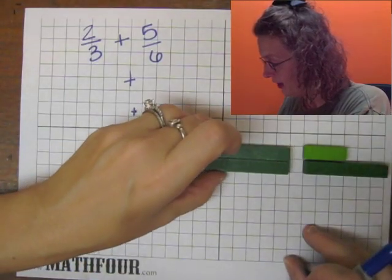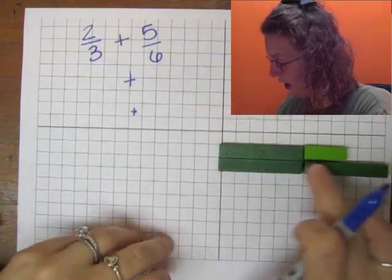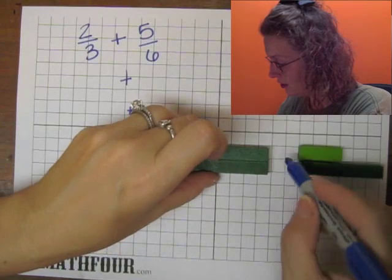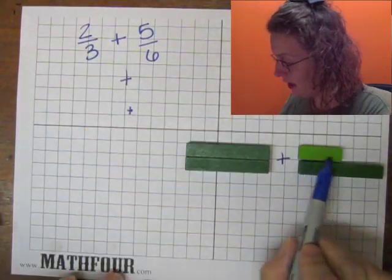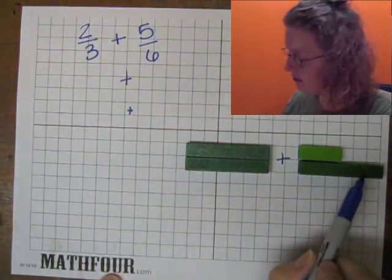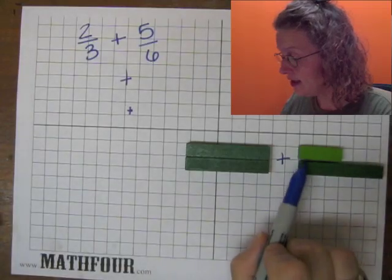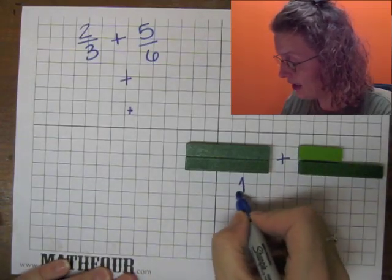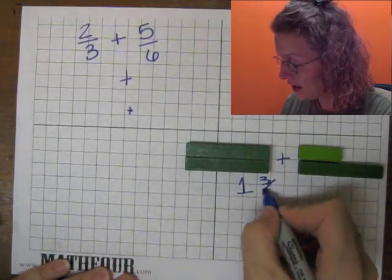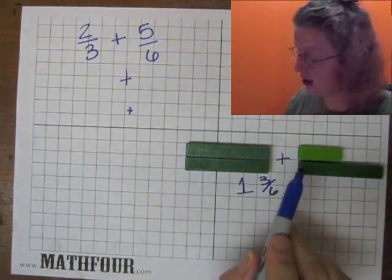So what we have left is one and three over this bit. Now this is where our answer is one and three over six. So how do we deal with three over six?